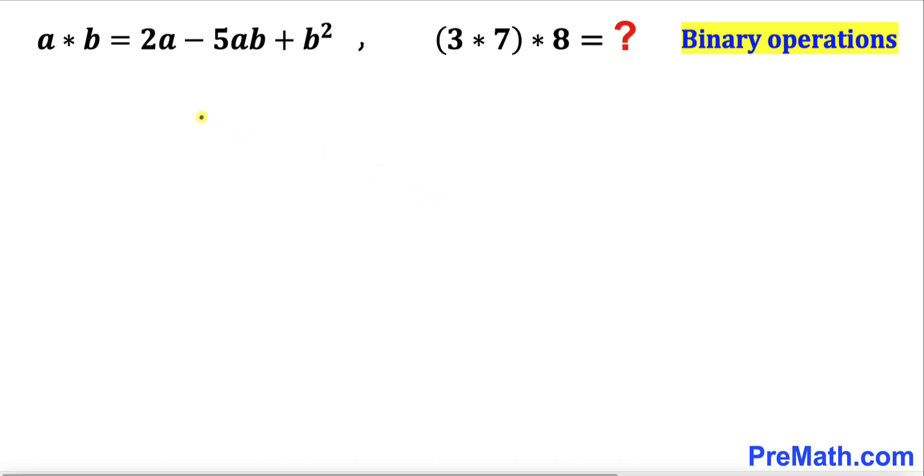Welcome to PreMath. In this video, we have got this binary operation a star b defined as 2a minus 5ab plus b squared. And now we are going to find the value of 3 star 7 and then star 8. Please don't forget to give a thumbs up and subscribe.